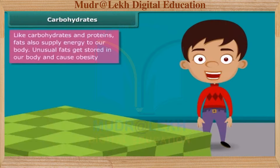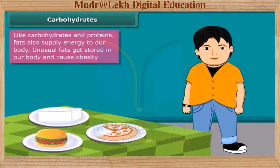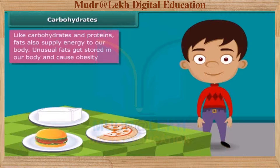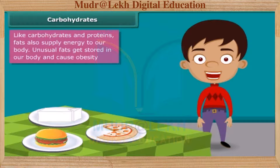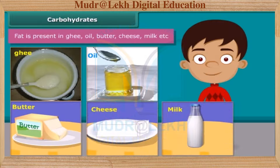I know that you all love pizza, burger, cheese, etc. But your parents do not allow you to eat them regularly because such foods contain large amounts of fat. Fat supplies us with energy. If we don't use up this energy, our bodies build up a store for future use in the form of body fat. This is the reason why people eating much oily food become obese. Ghee, oil, butter, cheese and milk are some main sources of fats.